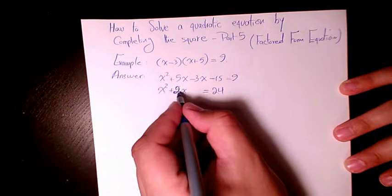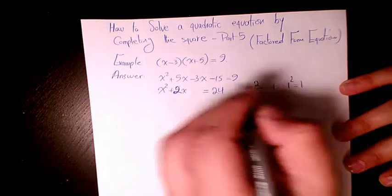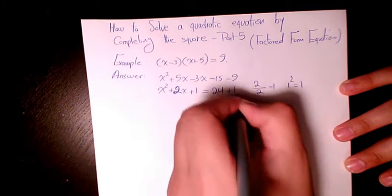Then here the coefficient is 2. 2 divided by 2 is 1. 1 squared is 1. So add 1 here and add 1 here.